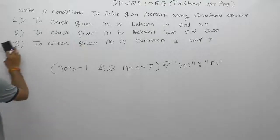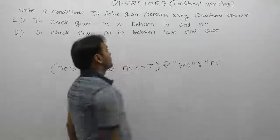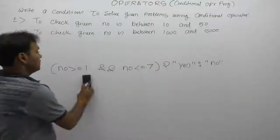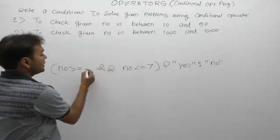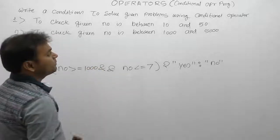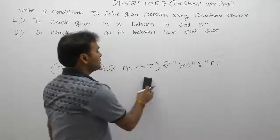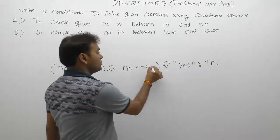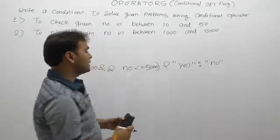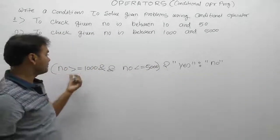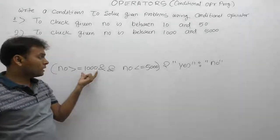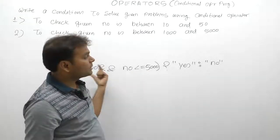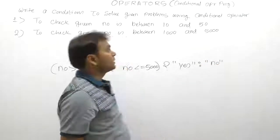Same as the next one — for problem two, the minimum limit is 1000. Now replace 1 with 1000: the number should be greater than or equal to 1000, and it should be less than or equal to 5000. For the maximum limit, write: number less than or equals to 5000. Reading the expression: number greater than or equals to 1000 AND number less than or equals to 5000 — if both are true, return yes; otherwise no.